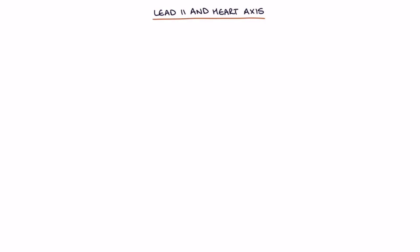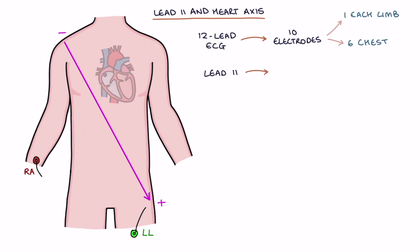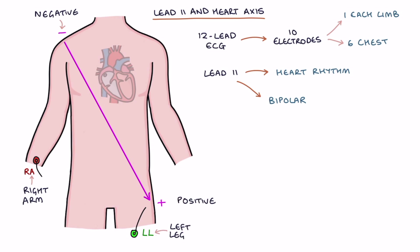Let's talk about lead 2 and the heart axis. A standard 12-lead ECG is produced by recording the electrical signals from 10 electrodes placed across the body — one electrode on each limb and 6 electrodes across the chest. Lead 2 is usually the optimal lead for assessing heart rhythm. It is a bipolar lead, meaning it represents the electrical changes in the space between two electrodes. One electrode is placed on the right arm as the negative electrode, and the other on the left leg as the positive electrode. The right arm connects at the right shoulder and the left leg connects at the left hip.